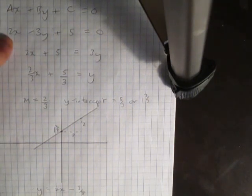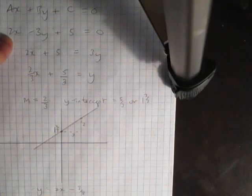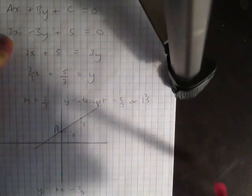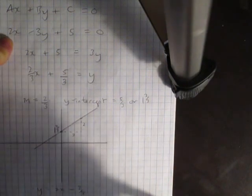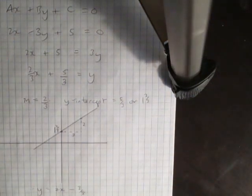So you might be given something like this, example 2x minus 3y plus 5 equals 0. And what you could do is rearrange it into the form y equals mx plus b, where the number in front of x is the slope and the constant, the number on its own, is the y-intercept.